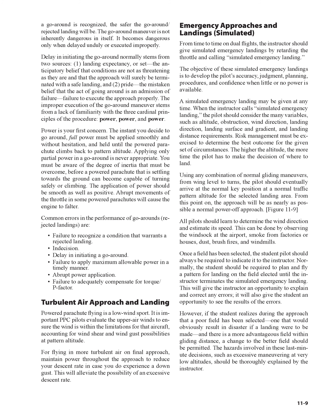Turbulent Air Approach and Landing: Powered parachute flying is a low-wind sport. It is important for PPC pilots to evaluate the upper air winds to ensure the wind is within the limitations for that aircraft, accounting for wind shear and wind gust possibilities at pattern altitude. For flying in more turbulent air on final approach, maintain power throughout the approach to reduce your descent rate in case you experience a down gust, alleviating the possibility of an excessive descent rate.